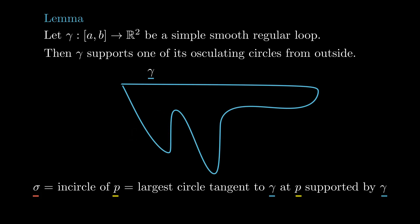Now take an arbitrary point p1 in the curve other than the base point, and consider its in-circle sigma1. Notice that sigma1 touches gamma again at another point. If that was not the case, we could inflate it a little bit more and remain inside of gamma, contradicting the maximality in the definition of in-circle.